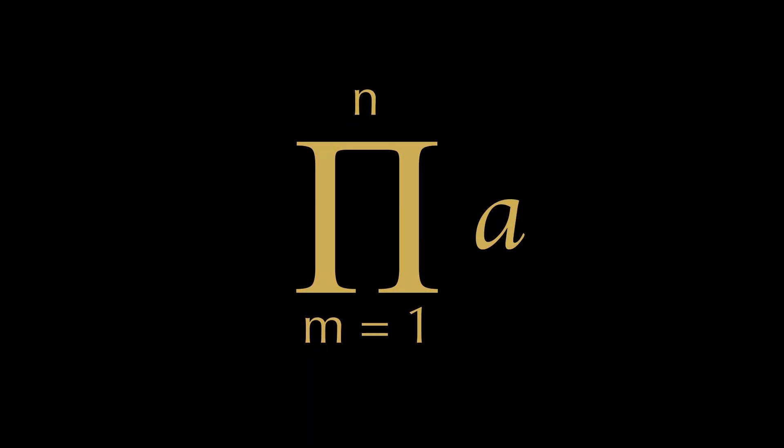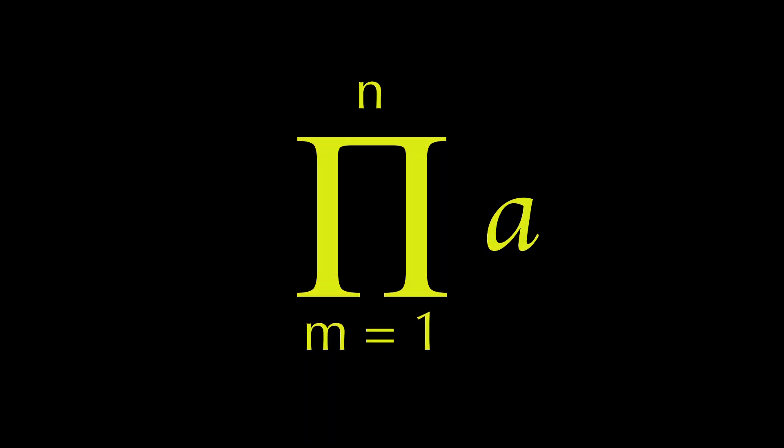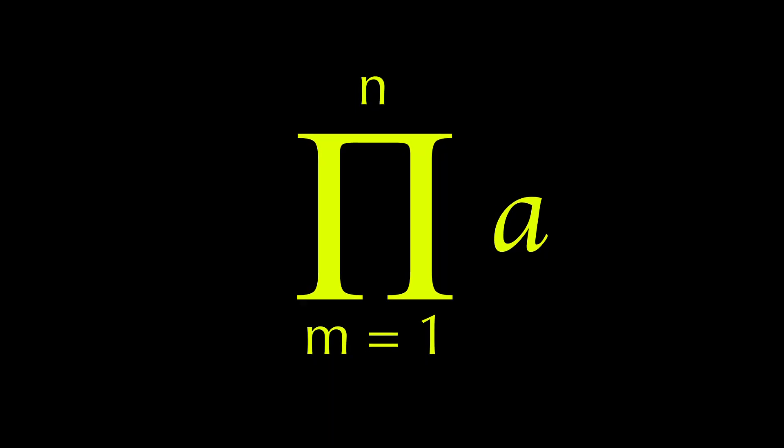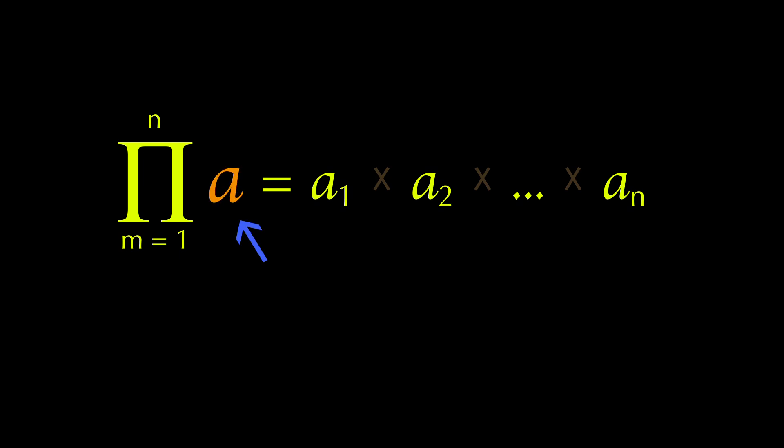Product, as the name suggests, is a shorthand way of writing repeated sequences of multiplication. So for example, this means this. This is the main term, the function of the formula. This shows you how many times it gets multiplied. And this is the starting index.